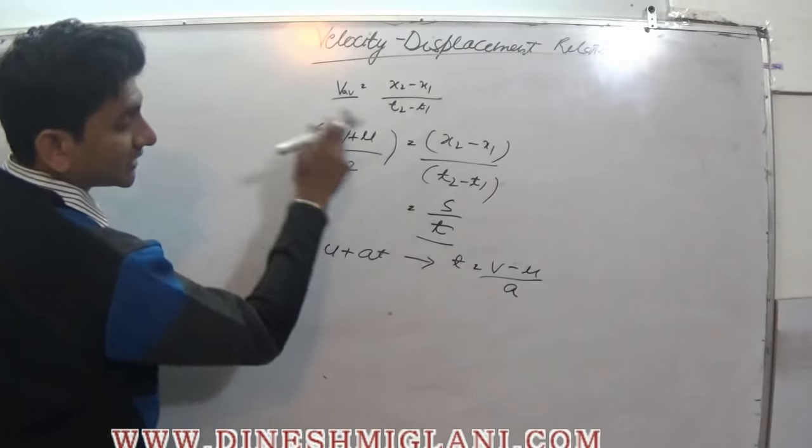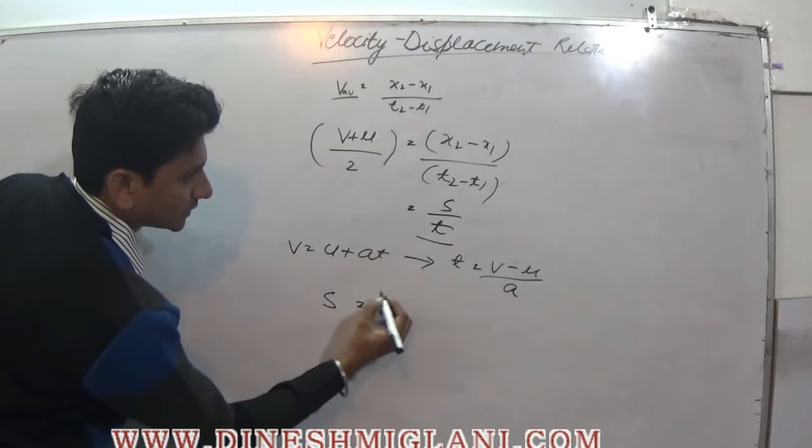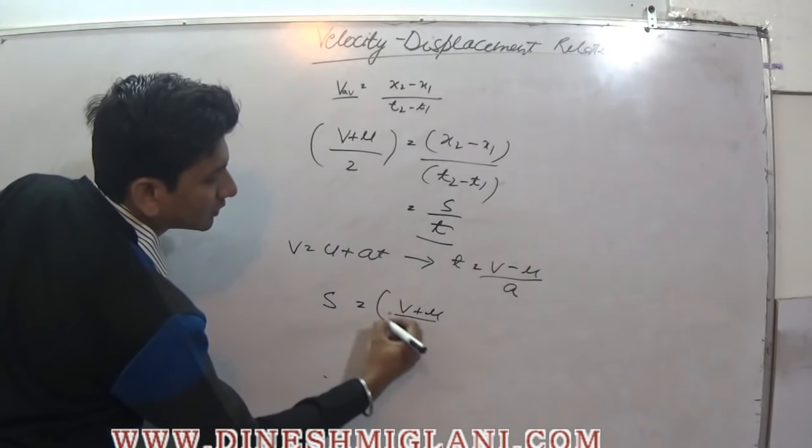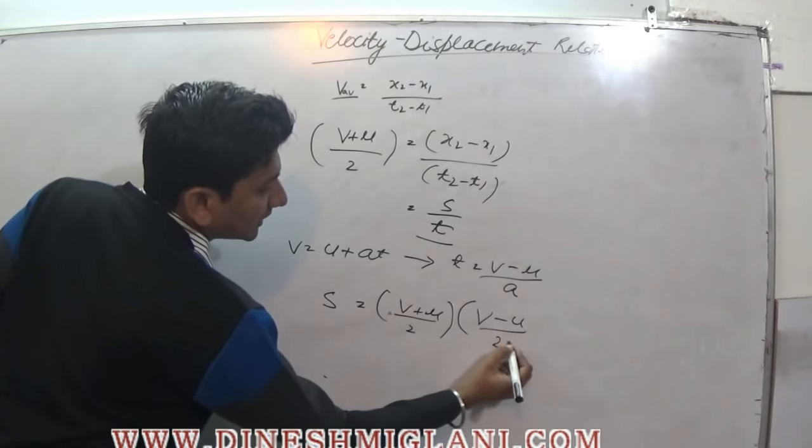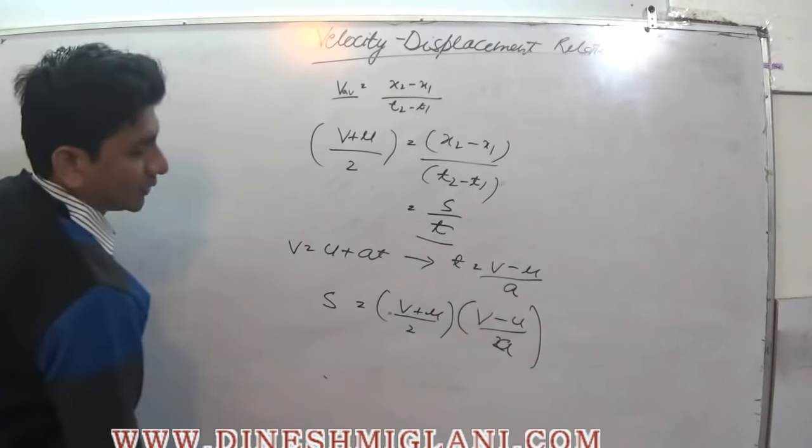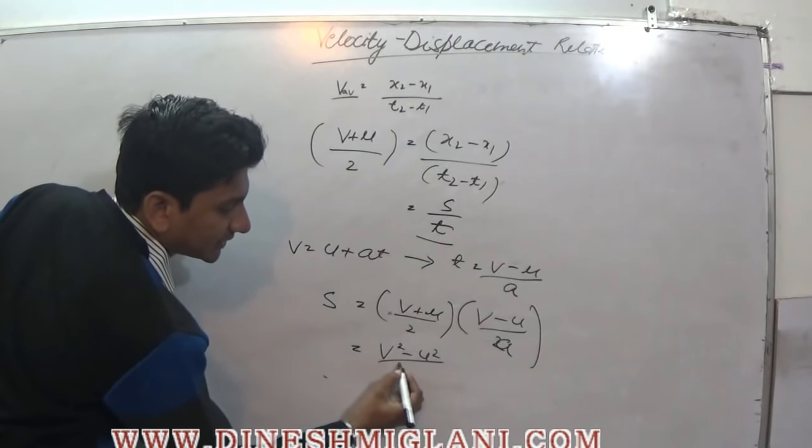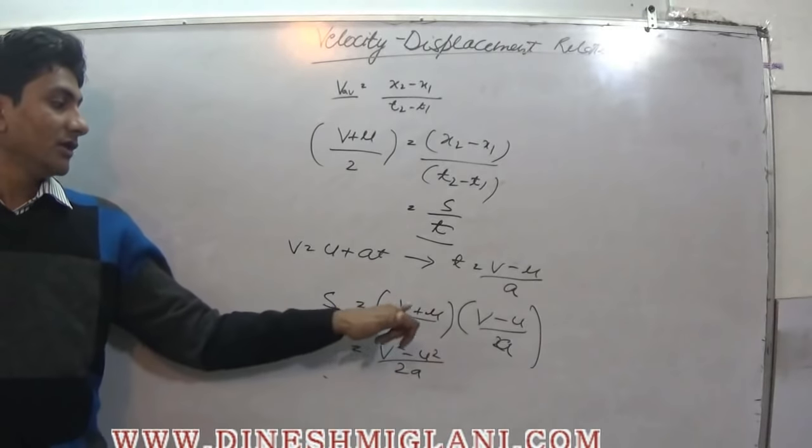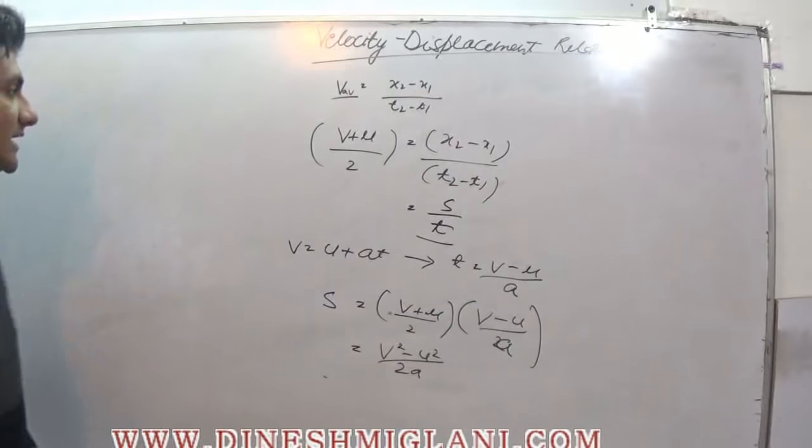Now substituting it in this, we get s is equal to v plus u by 2 whole multiplied by v minus u by 2a, which becomes v square minus u square divided by 2a. How we got this v square minus u square? a plus b into a minus b is equal to a square minus b square, as simple as that.